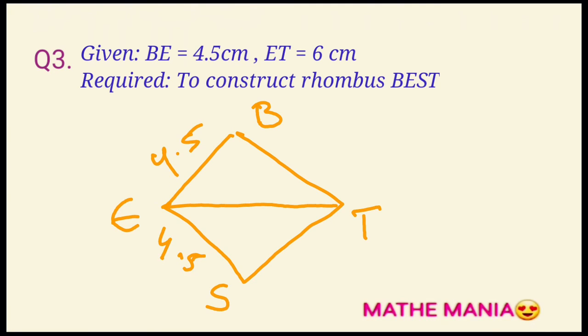Look at the rough figure. We will take all the sides of this quadrilateral as 4.5 cm. Clearly ET is the diagonal. Let's draw the figure.